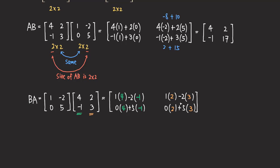Now the rest is basic arithmetic. We get 4 plus 2, which is 6. Then 2 minus 6, which is negative 4. Then 0 plus negative 5, which is negative 5. And 0 plus 15, which is 15. So that is the product BA. As you can see, AB and BA are not the same.